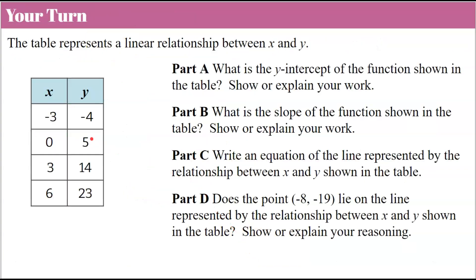Now it's your turn. Here's a four-part question using a different table. The table represents a linear relationship between X and Y. Part A: what is the Y-intercept of the function shown in the table? Part B: what is the slope of the function shown in the table? Part C: write an equation of the line represented by the relationship between X and Y. Part D: does the point (negative 8, negative 19) lie on the line? Pause the video, answer all four parts, then come back to check your work.